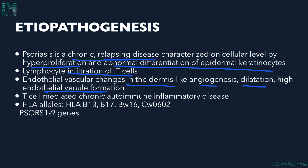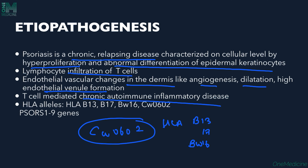Psoriasis is considered to be a T-cell-mediated chronic autoimmune inflammatory disorder. There are certain HLA alleles associated here: HLA-B13, B17, and BW16. An important one is HLA-CW0602. Other genes involved are PSORS1 to 9 genes, which are again important genetic factors.